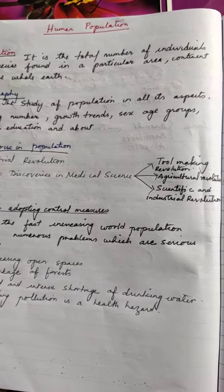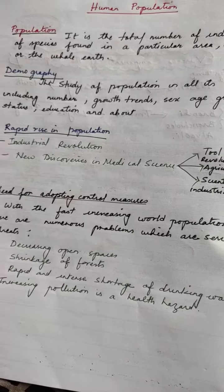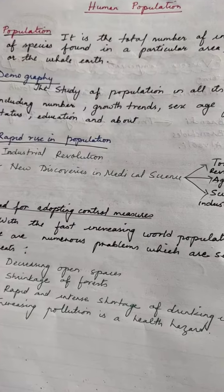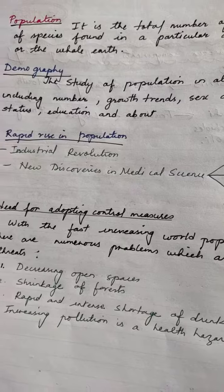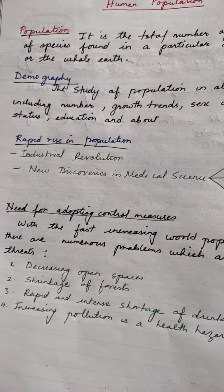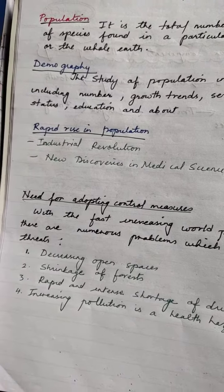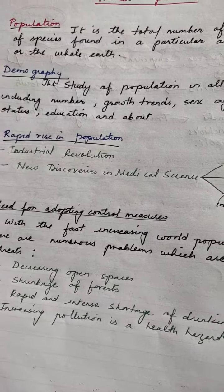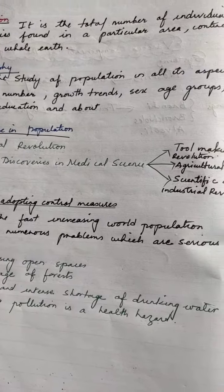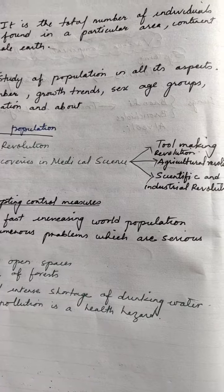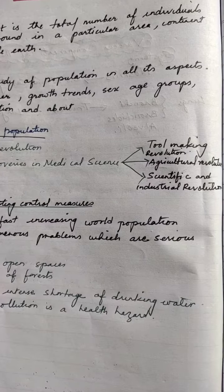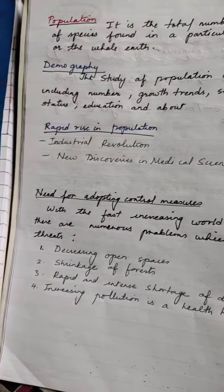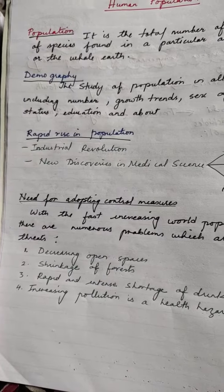Population is the total number of individuals of a species found in a particular area, continent, or the whole world. The study of population is known as demography. The rapid rise in population is because of the industrial revolution, new discoveries in medical science, tool-making revolution, agriculture revolution, and scientific and industrial revolution.